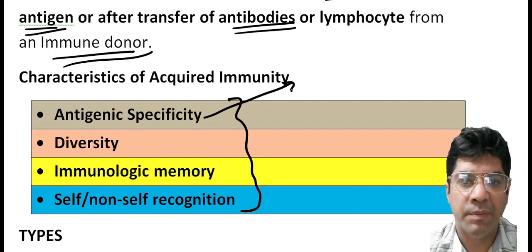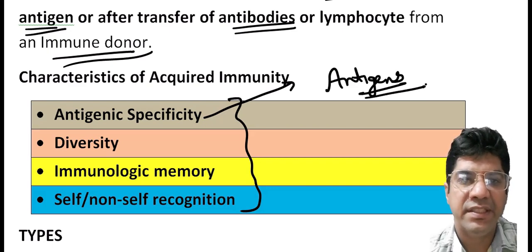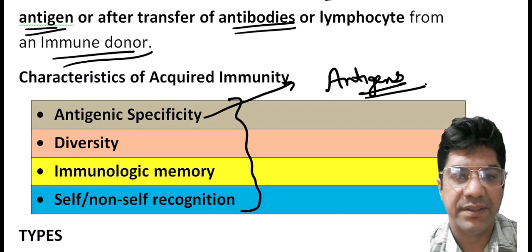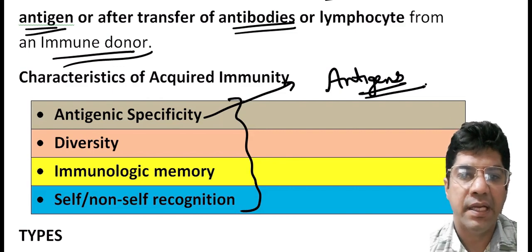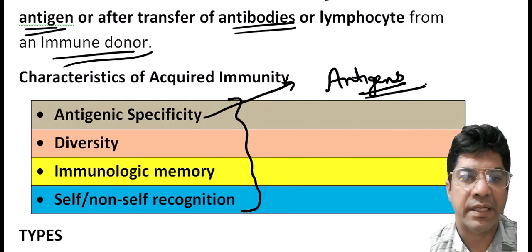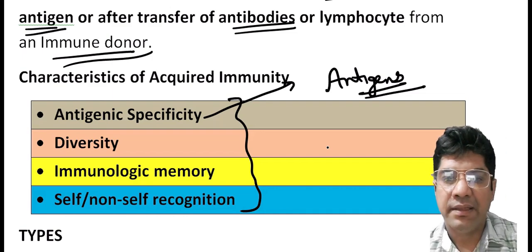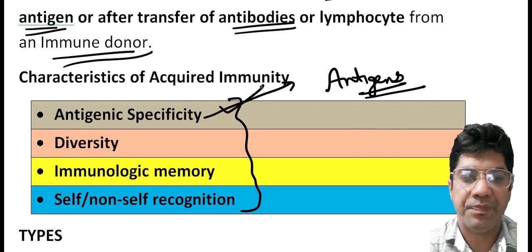Antigenic specificity refers to the ability of the immune system to distinguish and respond to specific foreign molecules known as antigens. For example, in the case of infection with the measles virus, the immune system recognizes and specifically targets antigens on the surface of the virus. It does not respond in the same way to unrelated pathogens like the flu virus — this is antigenic specificity.